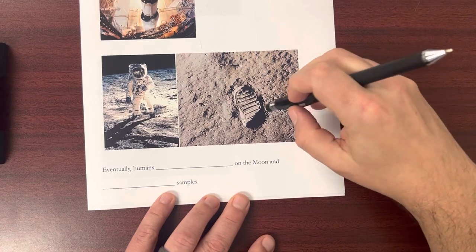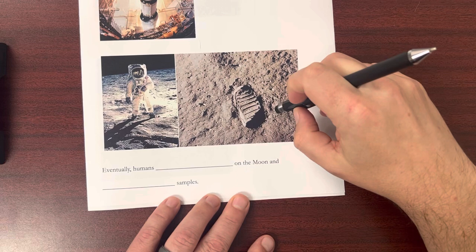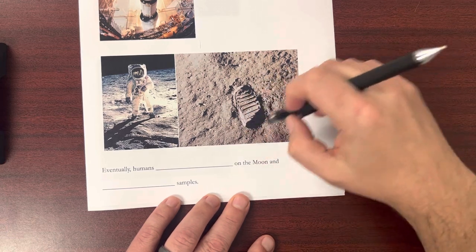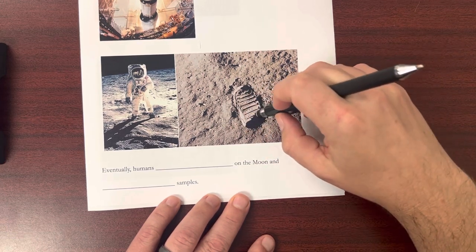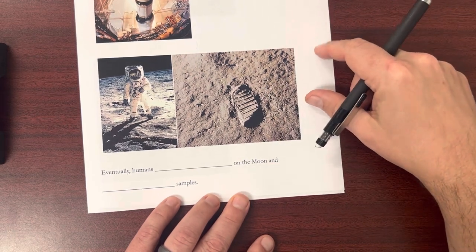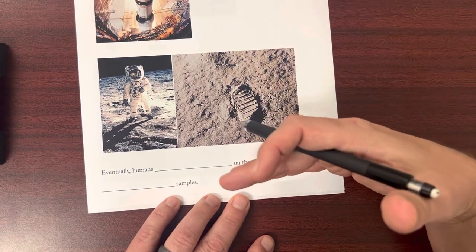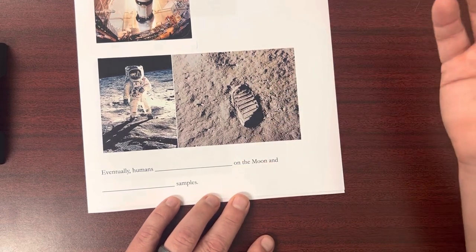And these footprints are actually still there, by the way. You have to remember, there's no atmosphere on the moon, and that means there's no wind. And these impressions will stay there until something comes along and either an impact hits it or something removes it. But it'll stay there for millions of years.